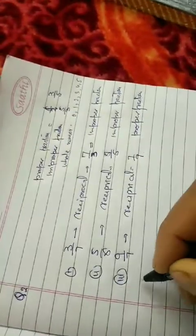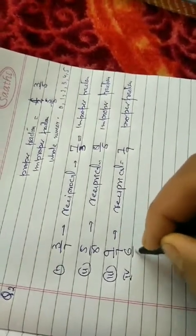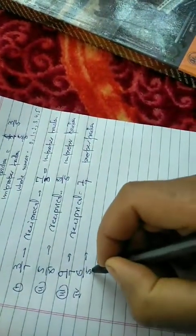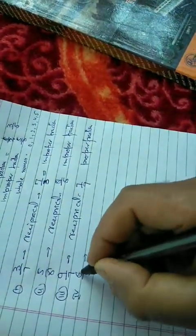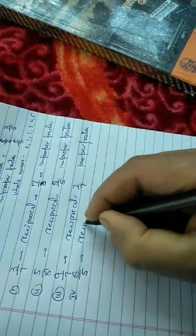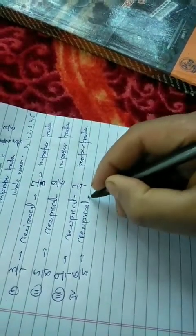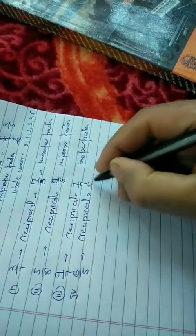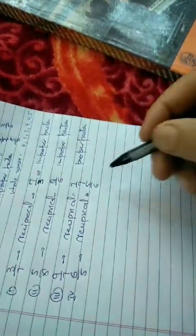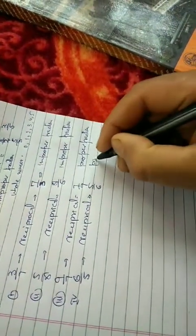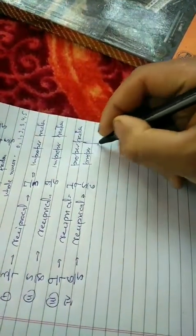Part number four, 6 by 5. Part number five, 1 divided by 8. We can write it as proper fraction. It was 8 by 1, which is a whole number.